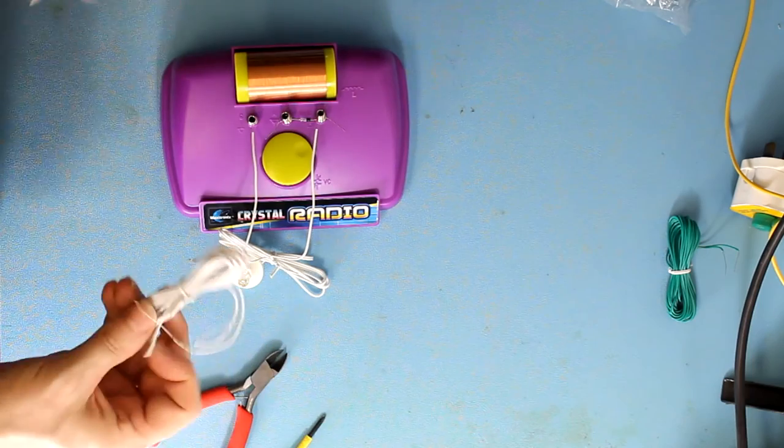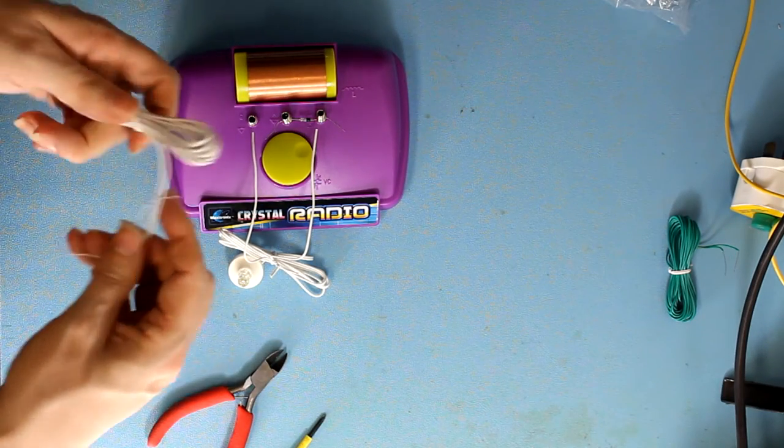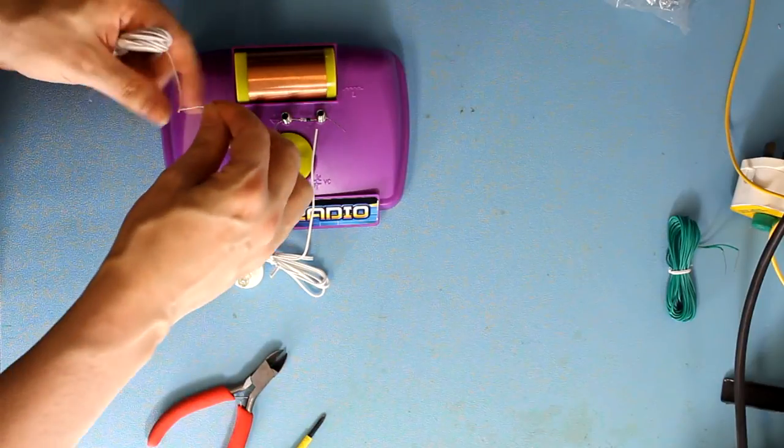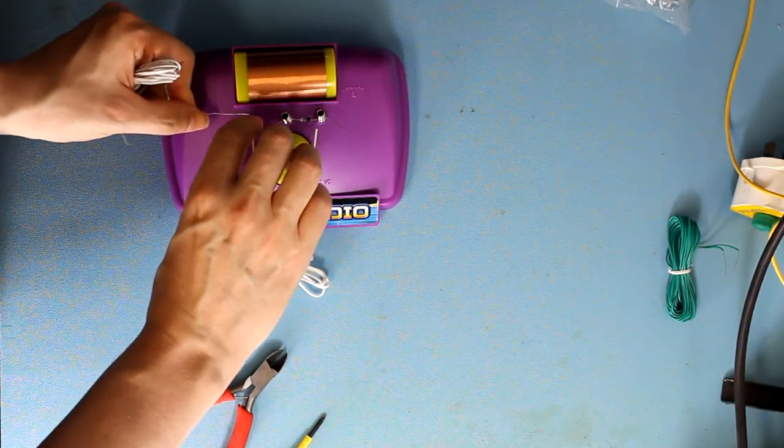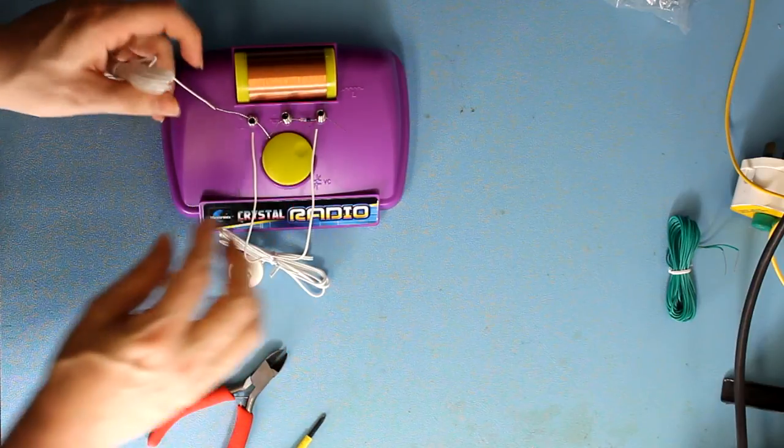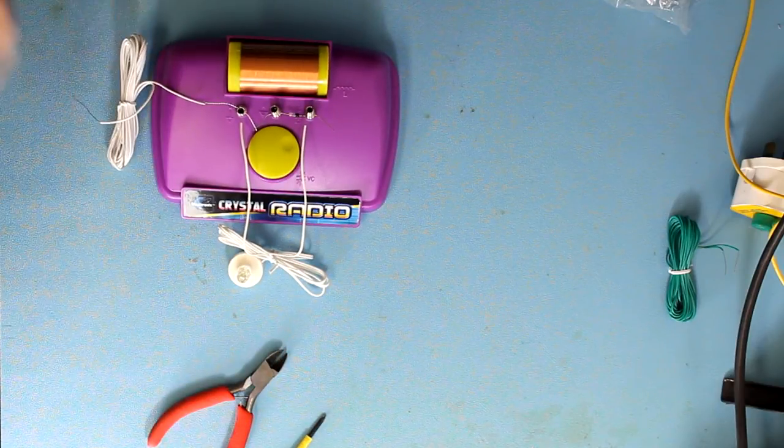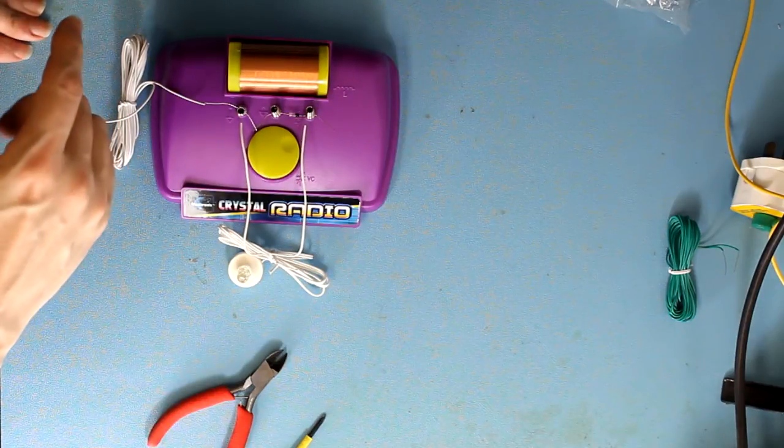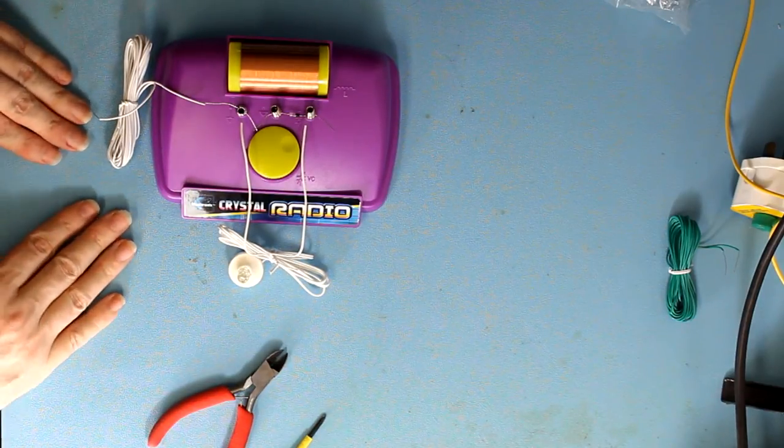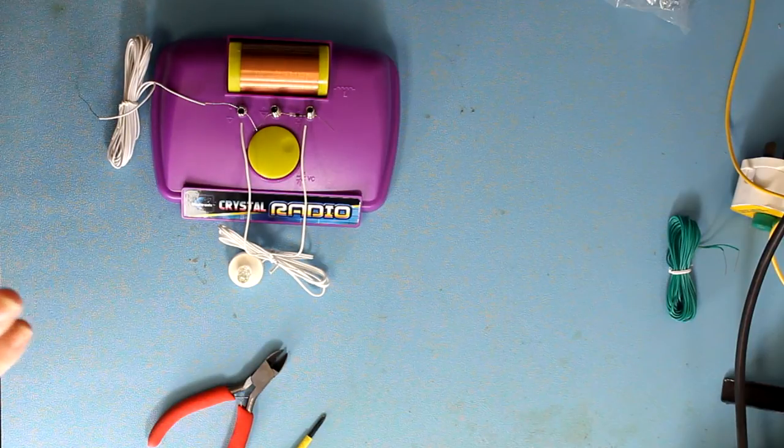Now to get the radio working, you do need a ground. And that's why here, I'm not going to unwind it now. But that would be connected to this tab. And then that would be taken away and put around a pipe or into a spike in the ground. Or any grounding point. But don't use mains ground.